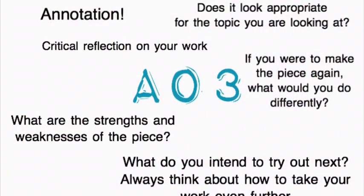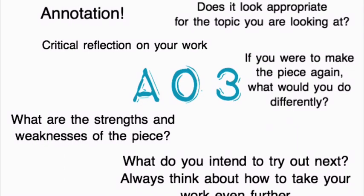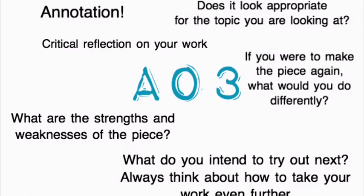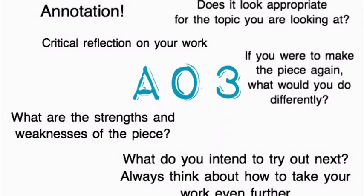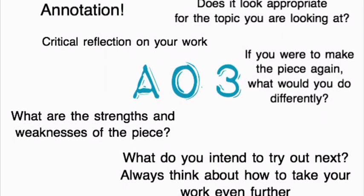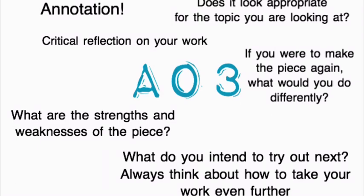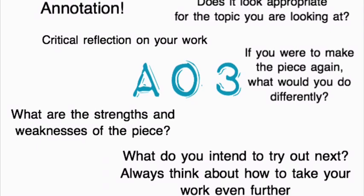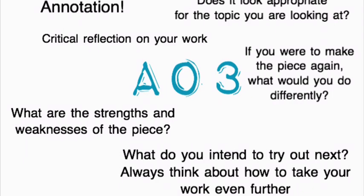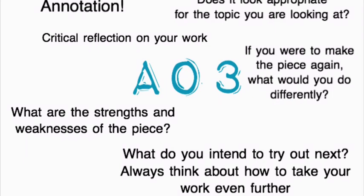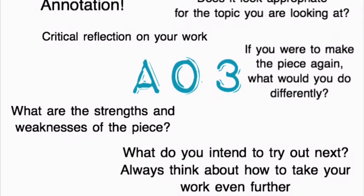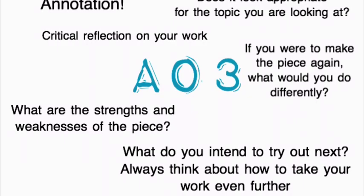A03 is all about annotation — it's a critical reflection on what you have produced. What are its strengths and weaknesses? What do you like about it, what don't you like about it? Is it appropriate for the topic you're looking at, and why? If you were to make the piece again, what would you do differently? What do you want to try out next to take your work even further?